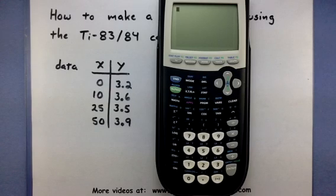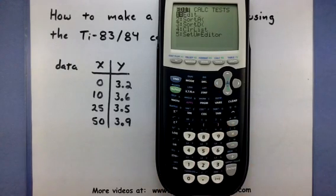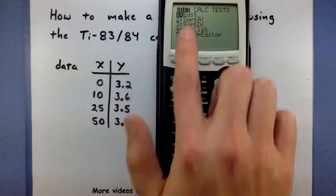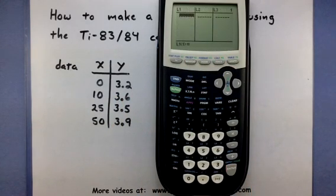So the first thing I need to do is get all of this data into the calculator. In order to do that, you want to go to your statistics menu, so find your stat button and go ahead and press that. Now the first option that's usually highlighted says Edit, so press Enter so we can edit some of the data in there.